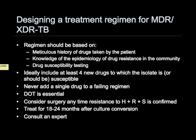The principles of designing a treatment regimen for multidrug resistant tuberculosis are shown on this slide. A regimen for MDR-TB must be based on a meticulous history of drugs previously taken by the patient, a knowledge of the epidemiology of drug resistance in the community, and whenever available, the results of drug susceptibility testing. The regimen ideally should include at least four new drugs to which the isolate is susceptible. Always remember that one should never add a single drug to a failing regimen.